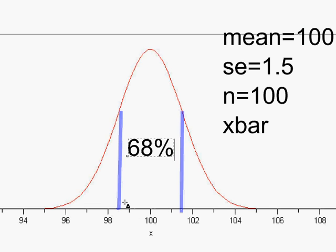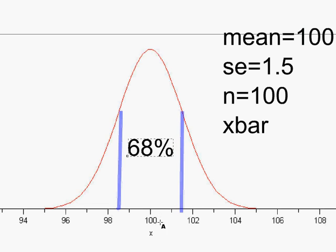If the sample mean is right in that region, that's precisely what we expected to happen — most of the time the sample mean should be between those two numbers. 32 percent of the time we'd get a sample mean either larger than 101.5 or lower than 98.5. So if we get a sample mean between 98.5 and 101.5, we would not reject the null hypothesis.